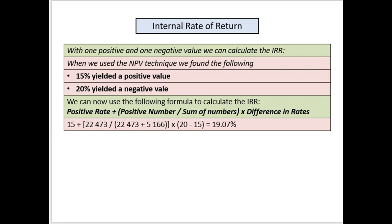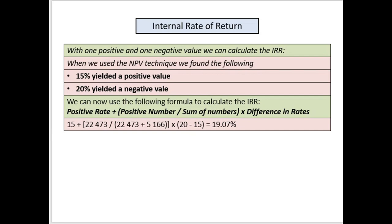Now let's go have a look at the payback period technique. Once again we take the same information as given for the net present value, but we assume that they are buying the machine for 190,000 rand excluding VAT.